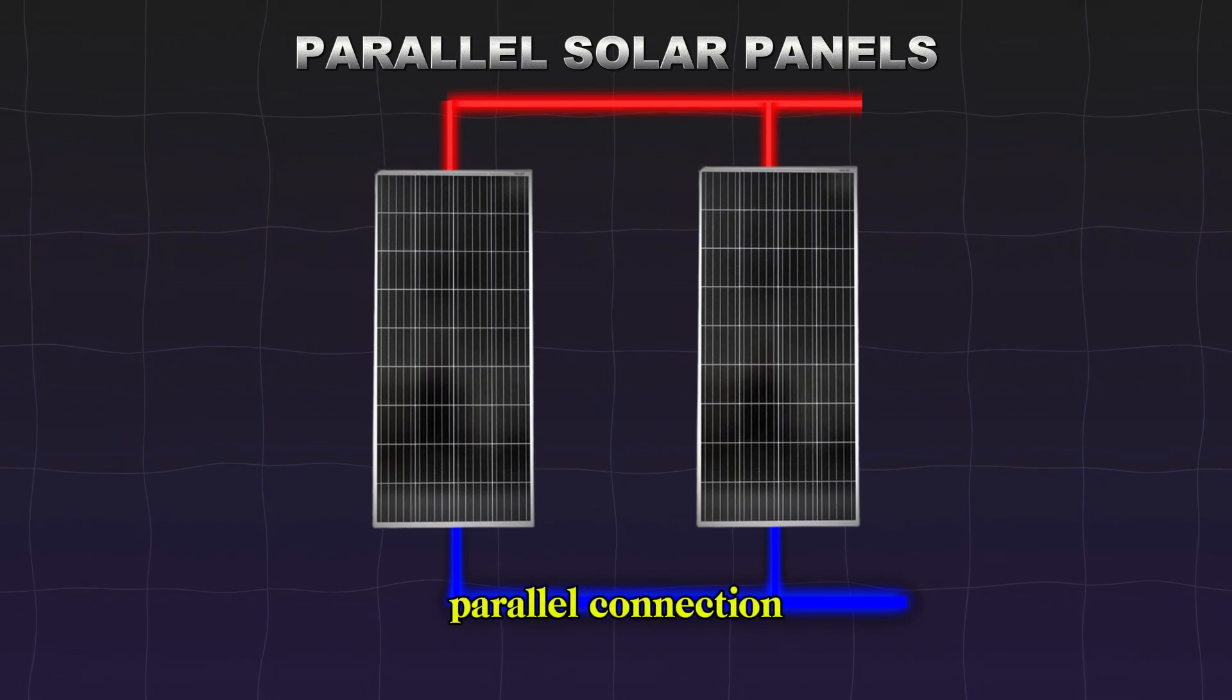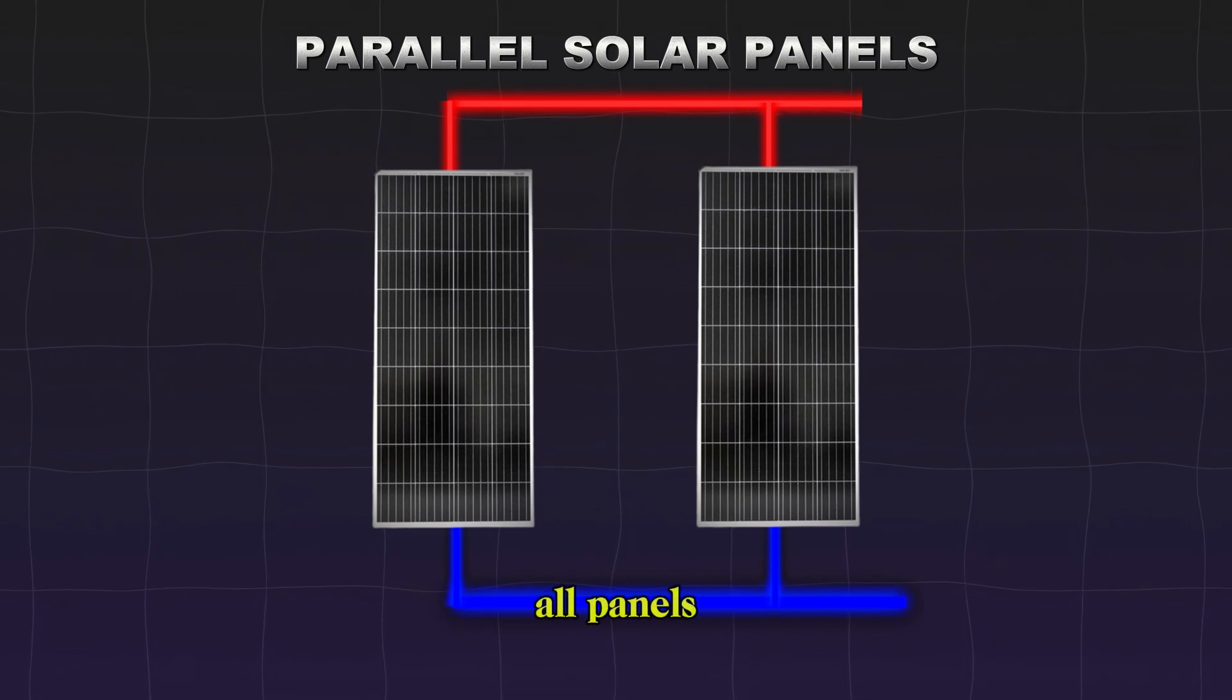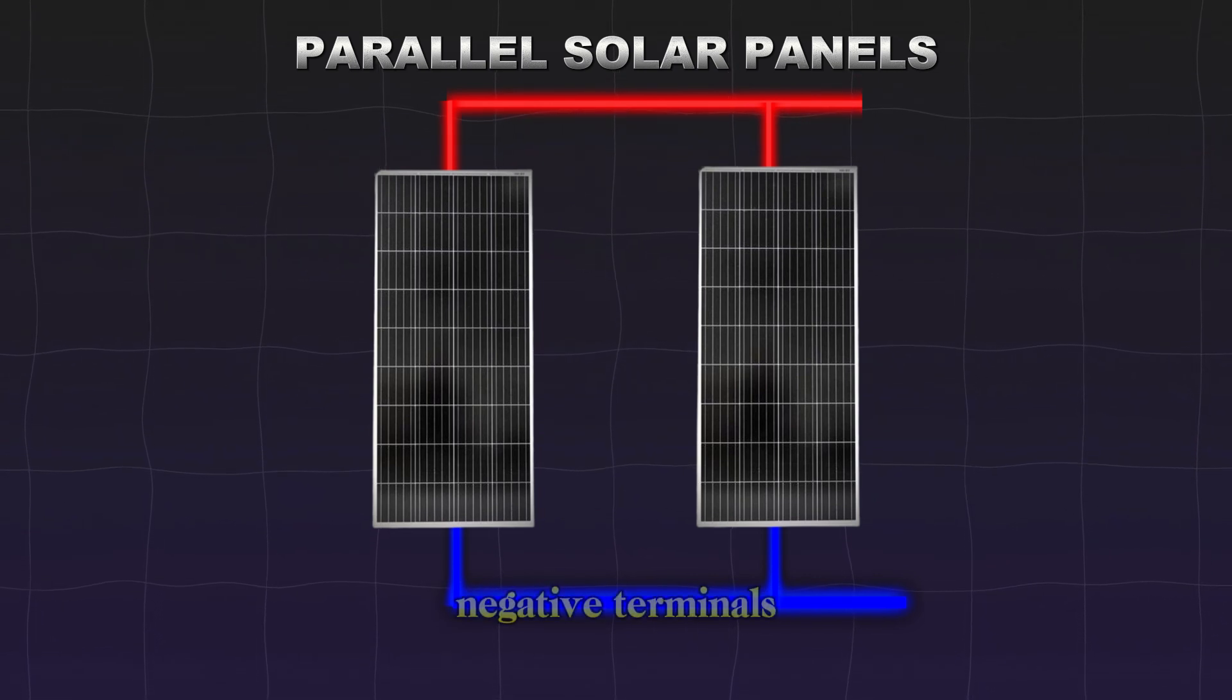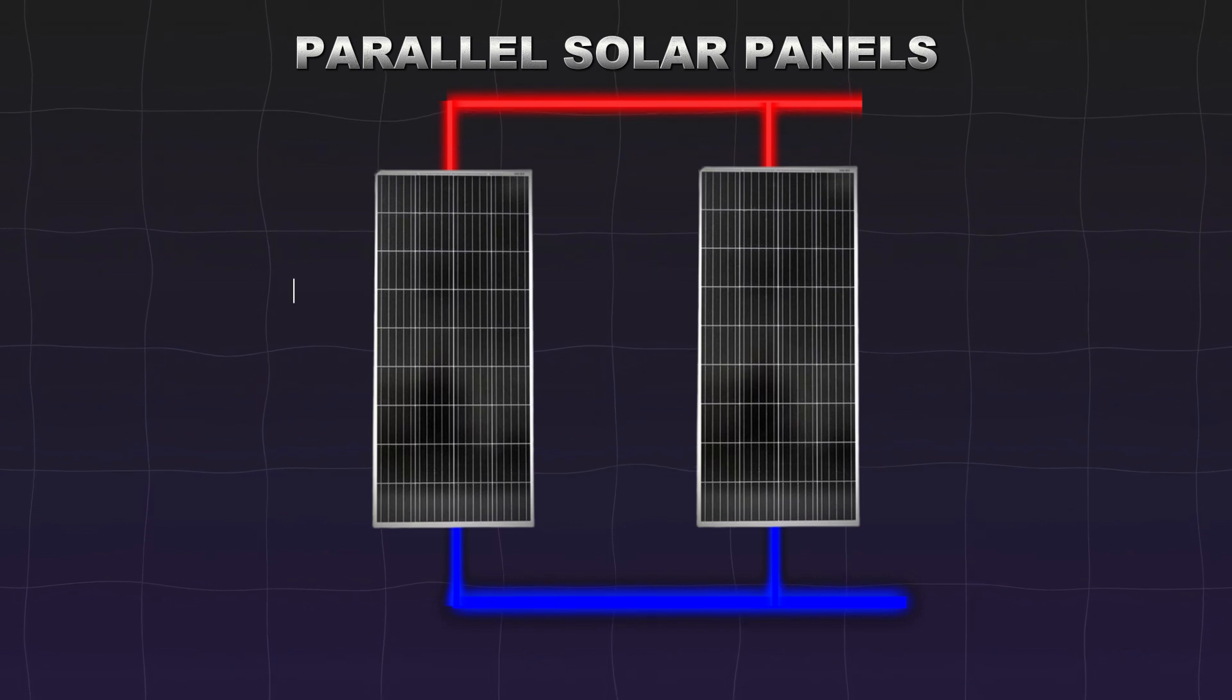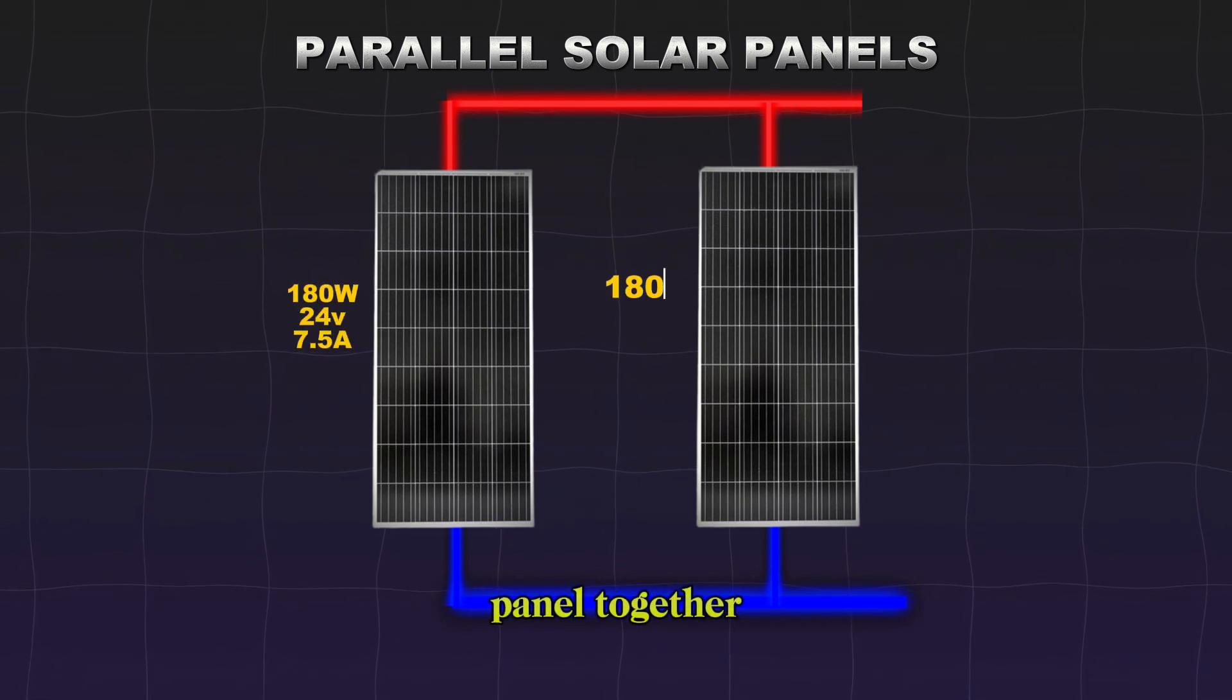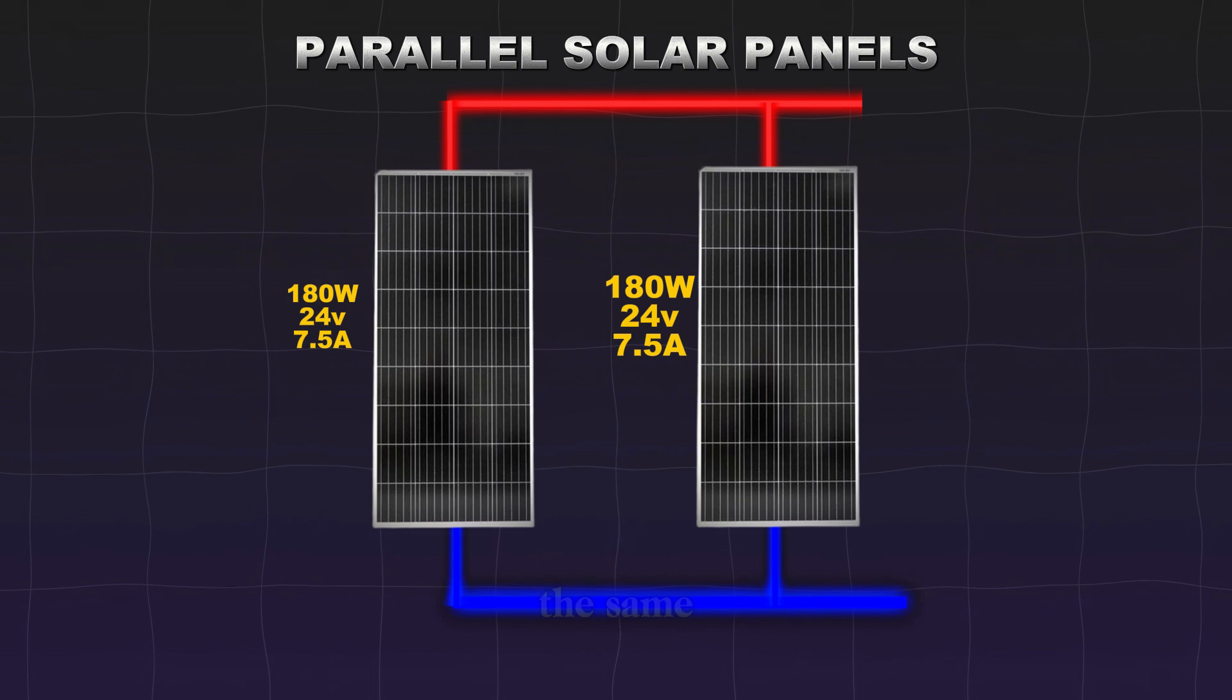In a parallel connection, the positive terminals of all panels are connected together, and the negative terminals are connected together. This arrangement adds the current of each panel together, while the voltage remains the same.